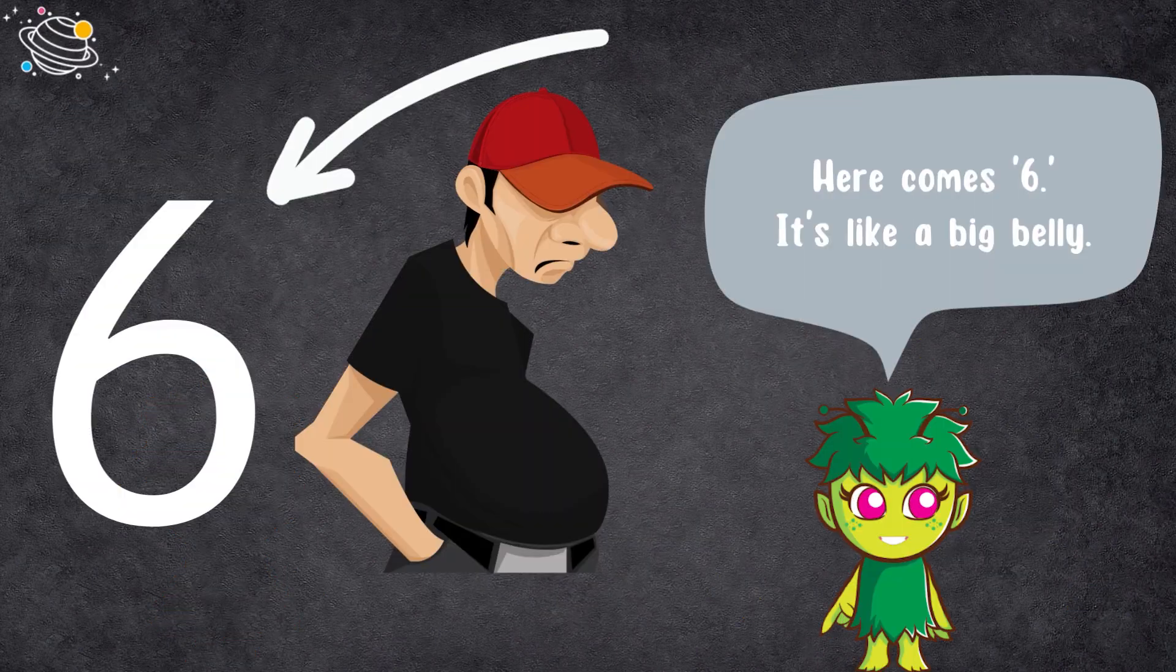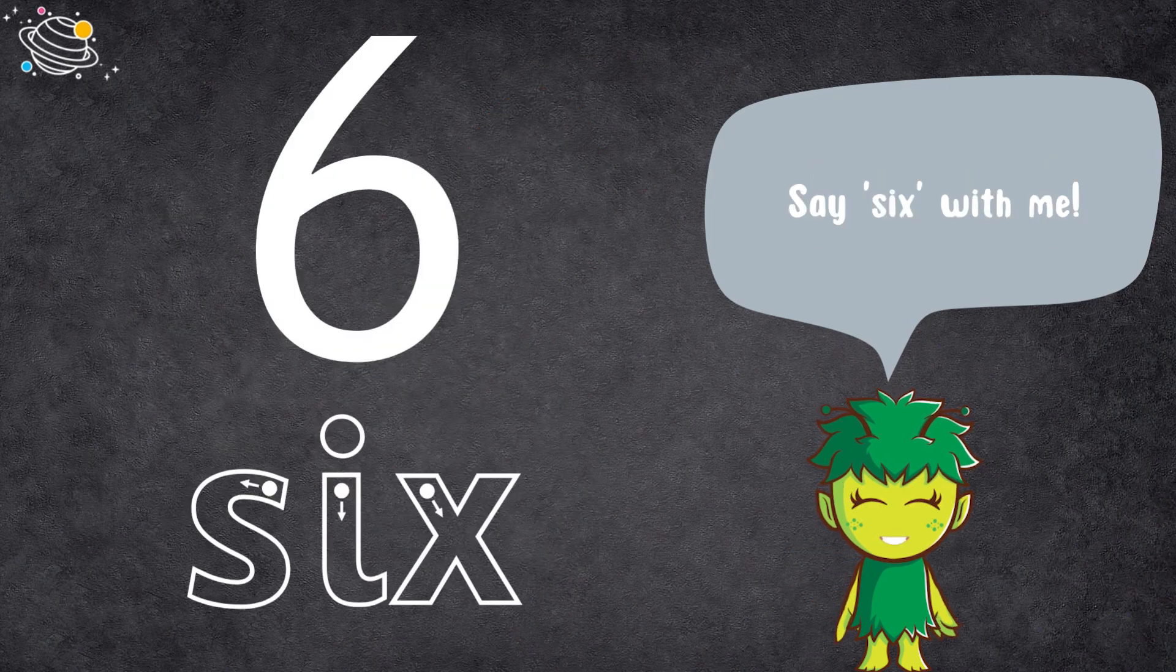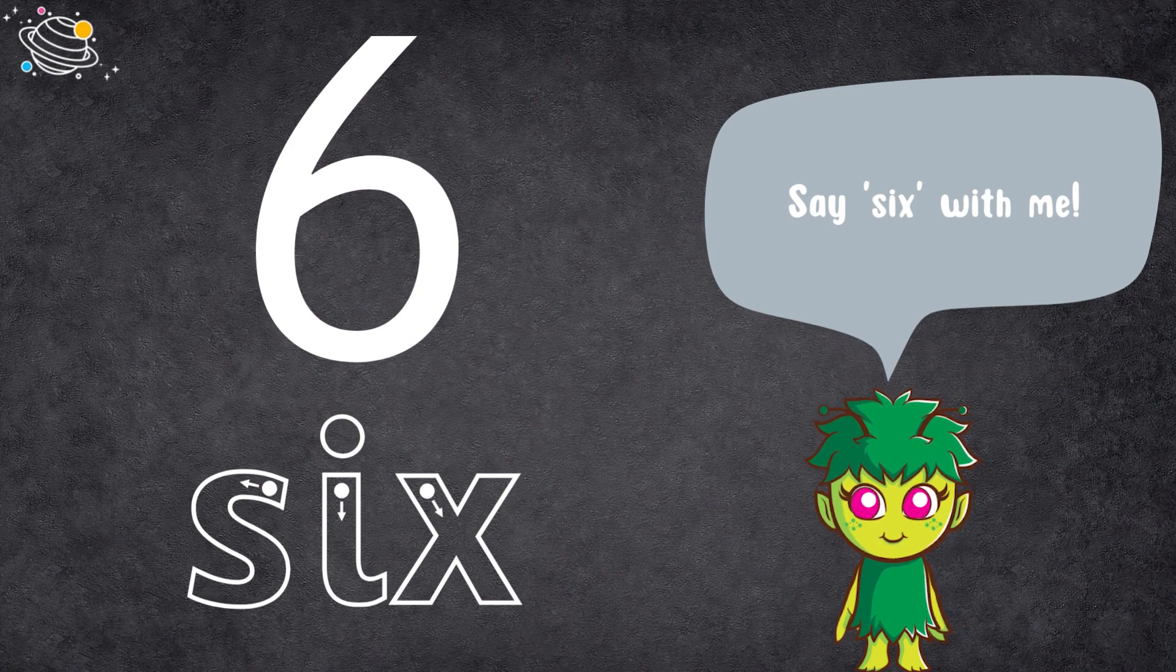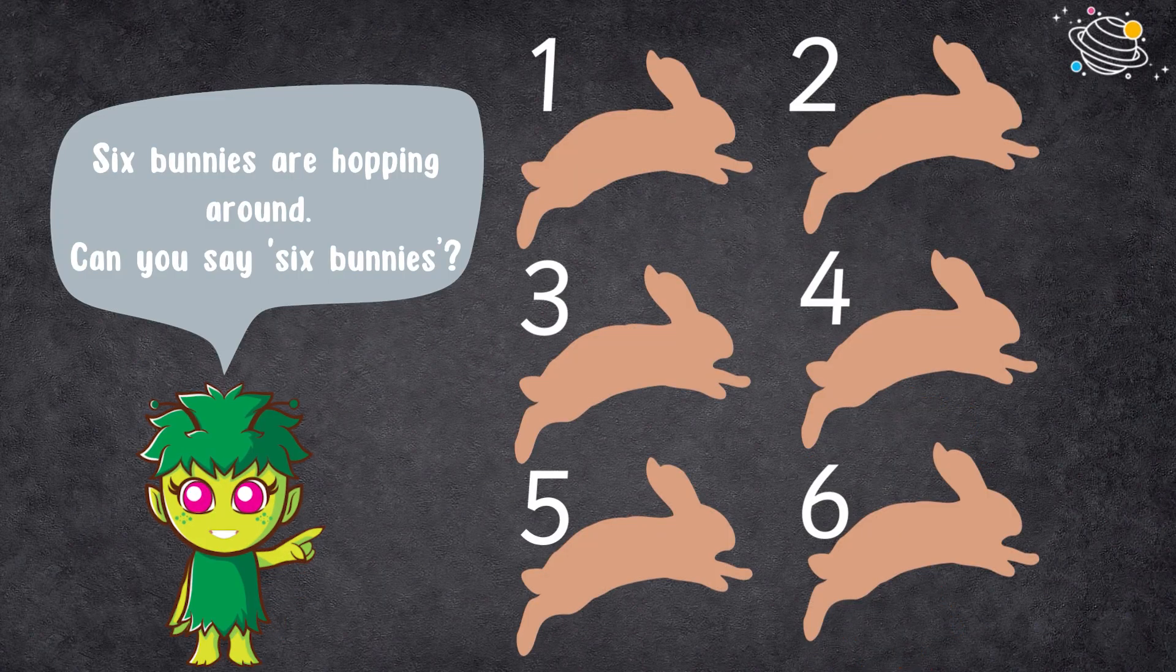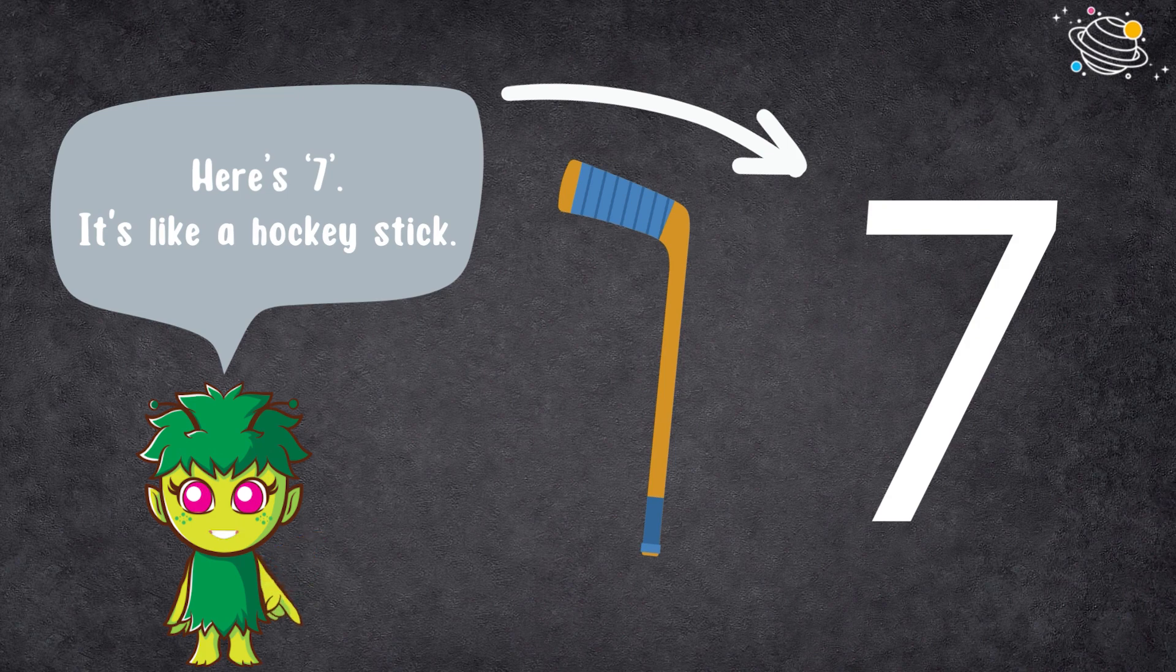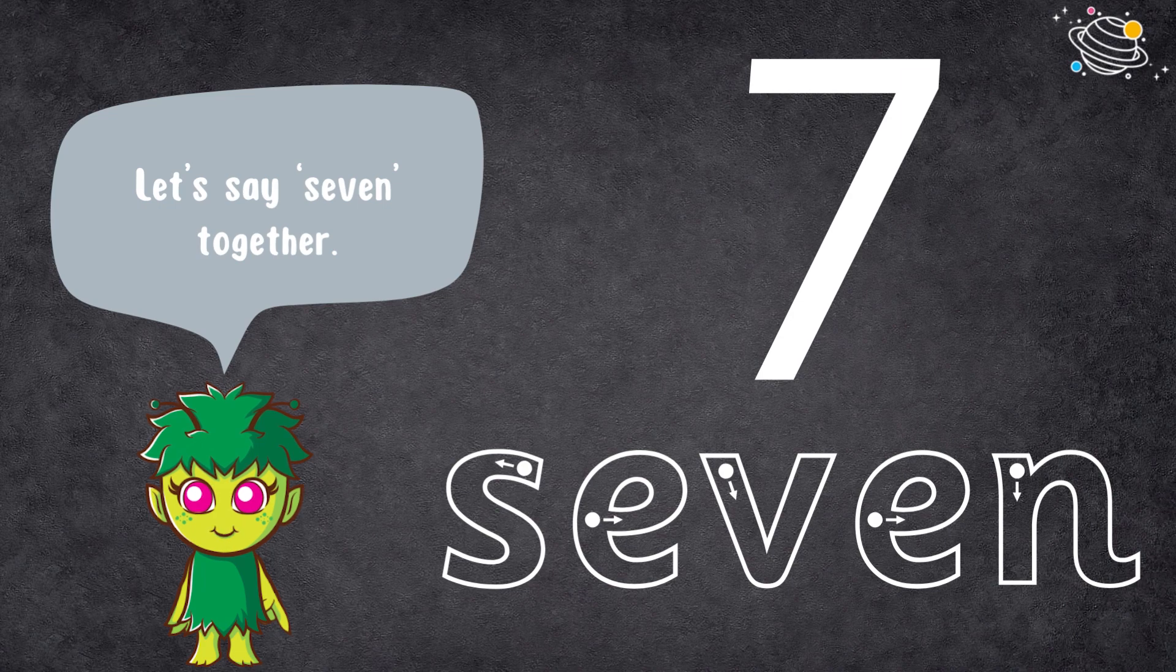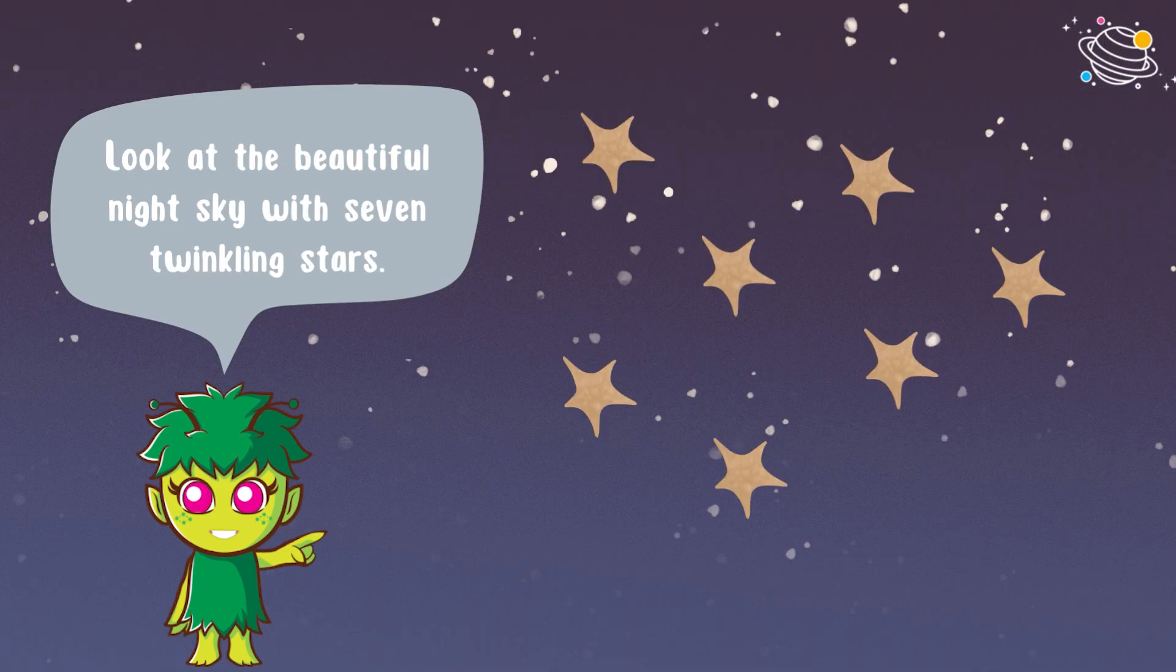Here comes six. It's like a big belly. Say six with me. Six bunnies are hopping around. Can you say six bunnies? Here's seven. It's like a hockey stick. Let's say seven together. Look at the beautiful night sky with